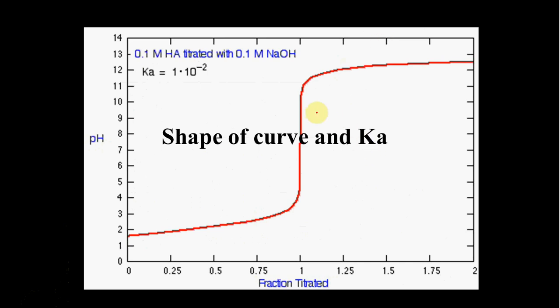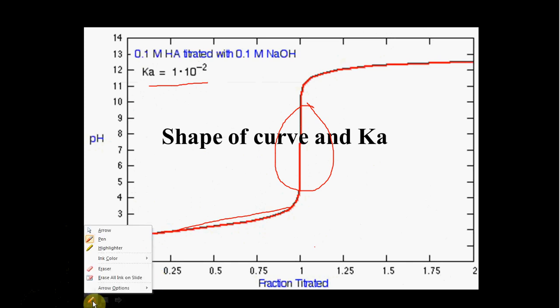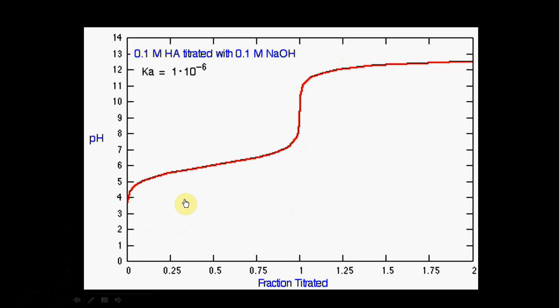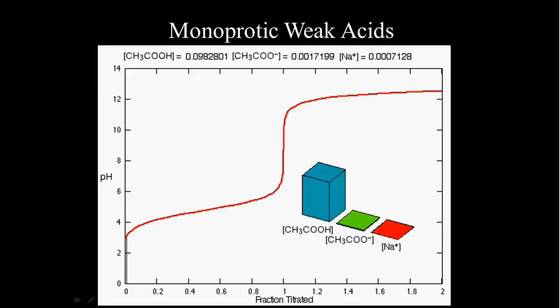The shape of that curve as I run this you'll see as the Ka gets smaller and smaller this flat area of the curve is shorter and shorter and this buffer region becomes longer and longer.